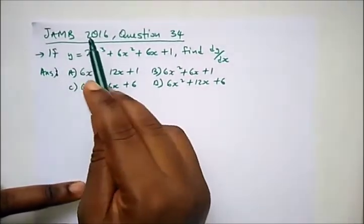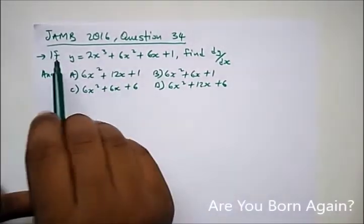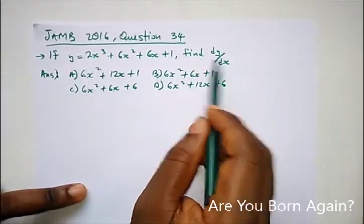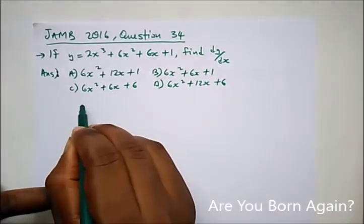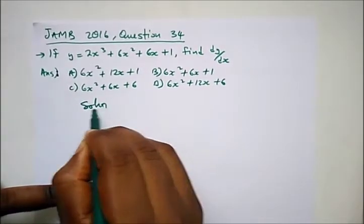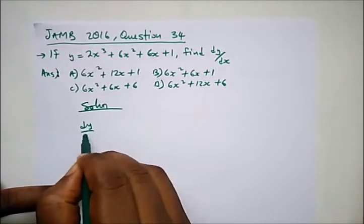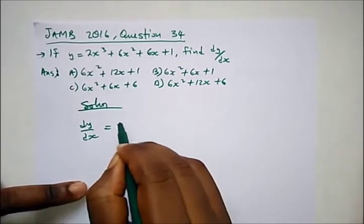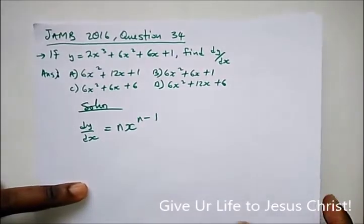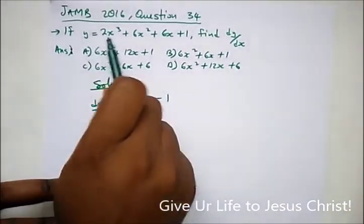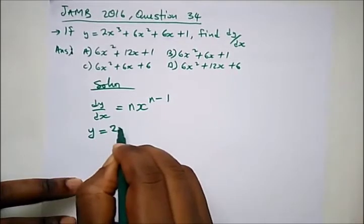We have this question from JAMB 2016 Question 34, which says: if y is equal to this, find dy/dx. This is just a simple differentiation using the power rule, which says dy/dx is equal to n·x^(n-1). We'll differentiate each element in this equation.